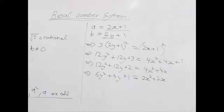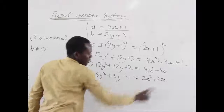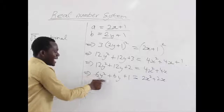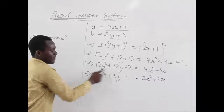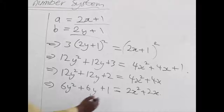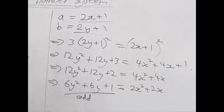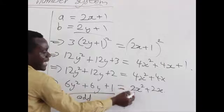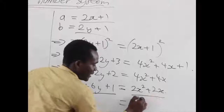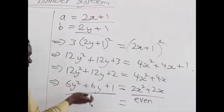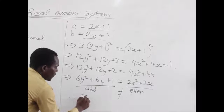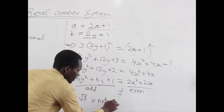Now we are done with our simplification. We want to see if the left-hand side is actually equal to the right-hand side. Six is an even number, so 6 multiplied by any number gives an even answer. That means the entire left-hand side expression is odd, because even plus even plus 1 is odd. But on the right-hand side, 2 times any expression is even, and two even numbers added together give an even result. There is no way an odd answer can equal an even answer — this is a contradiction. So this shows us that root 3 is not rational.